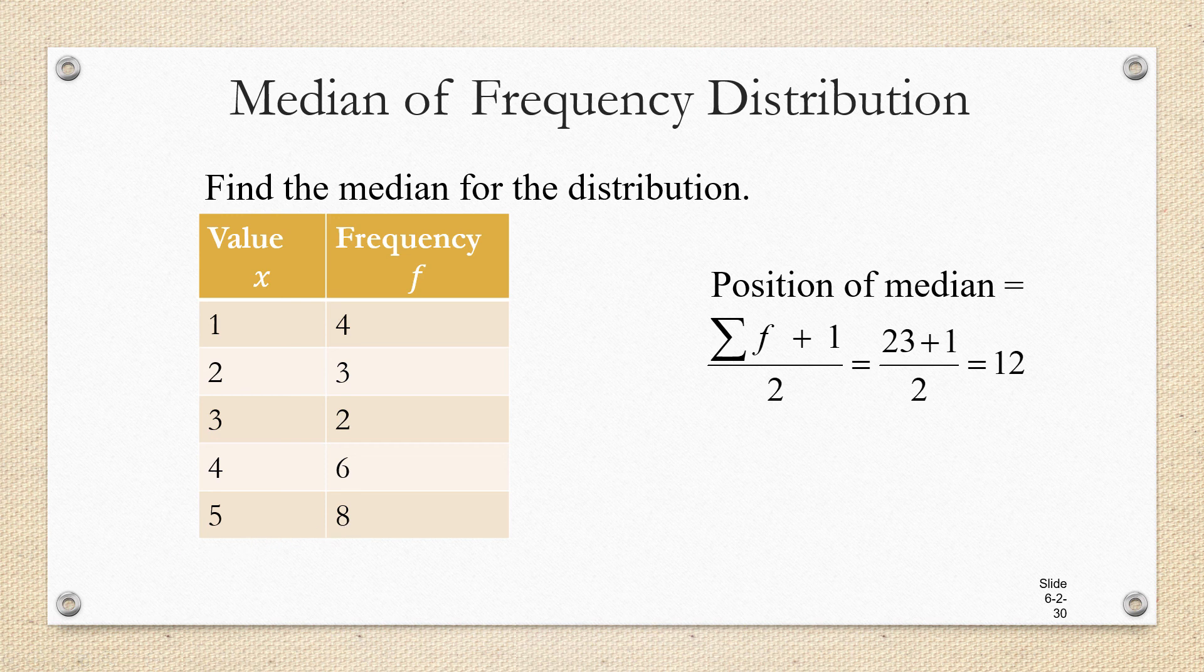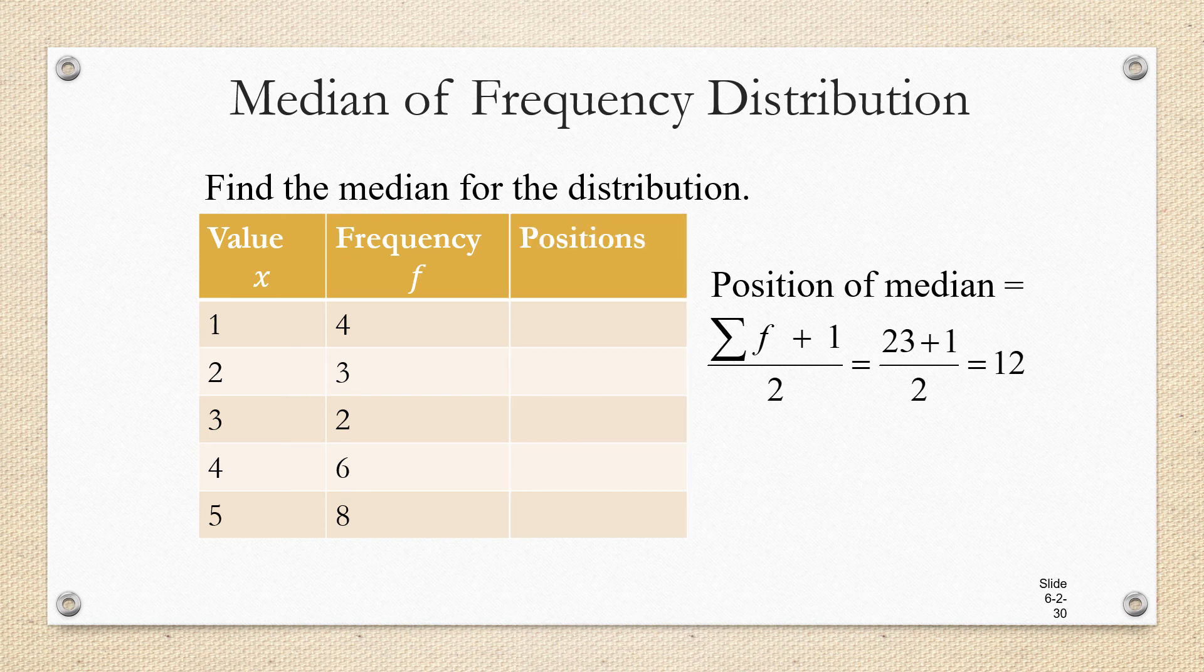23 plus 1 over 2 is going to be 24 over 2, which is 12. So we know that the median is in the 12th position among the data. But when we're given the data in a frequency distribution, how do we find the 12th position?